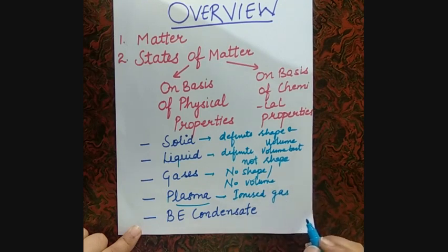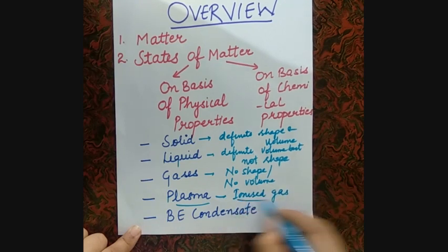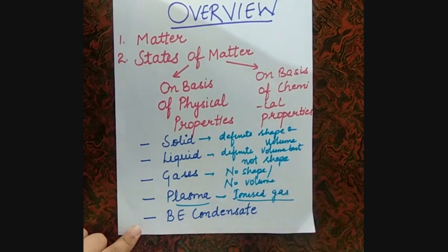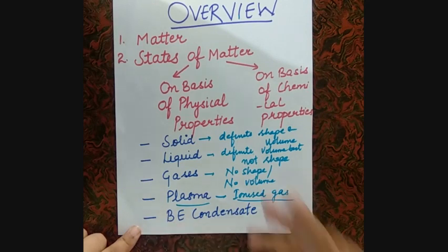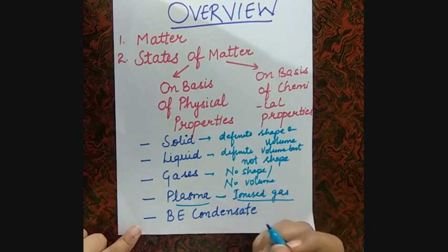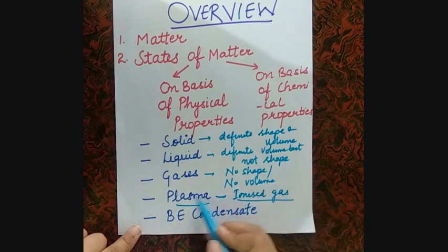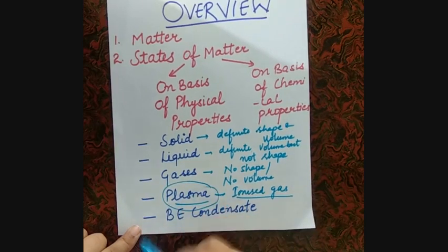Ionized gas means — like your fluorescent tubes, CFL bulbs that you use — generally in fluorescent tubes, neon gas bulbs and similar things, plasma is present.